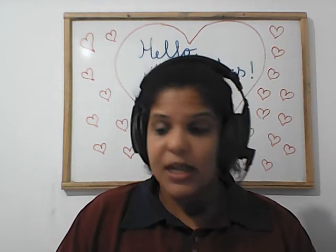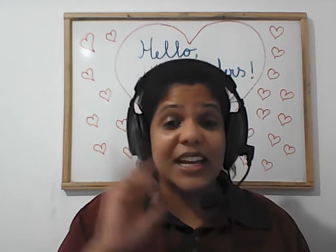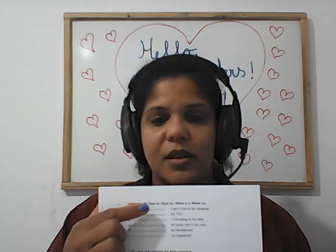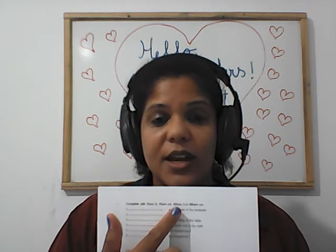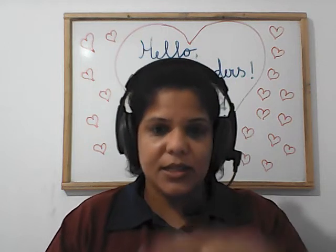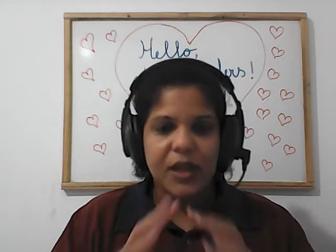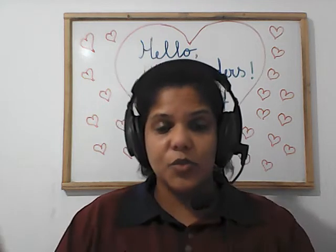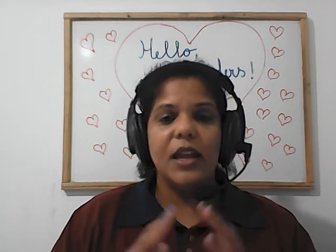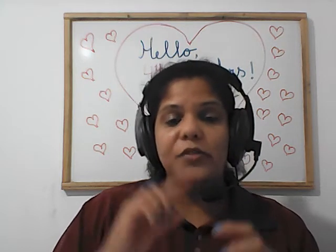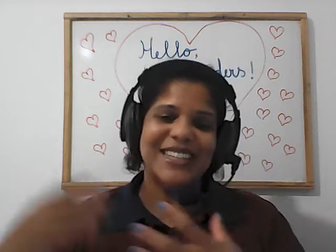Let's go to exercise three. Complete with: there is, there are, where is, where are. Remember — when the sentence is singular and we are describing something, we use 'there is.' There is e there are são usados para descrevermos um ambiente, um espaço. If what we are describing is singular — there is. But if what we are describing is plural — there are.